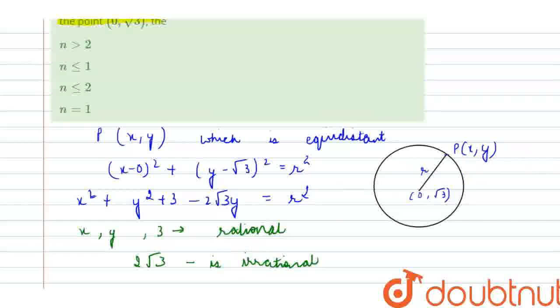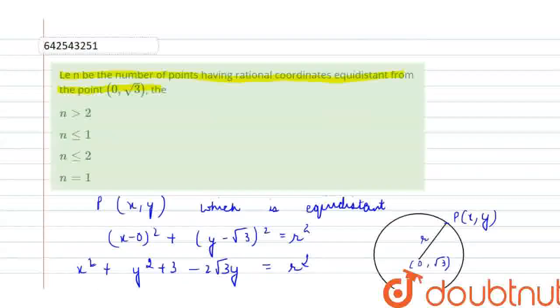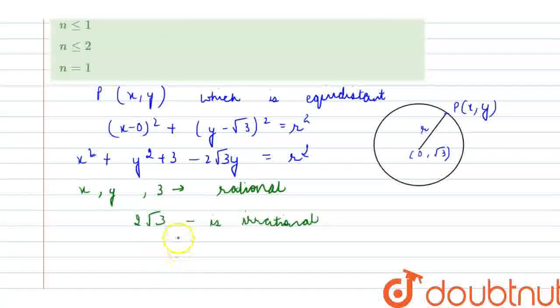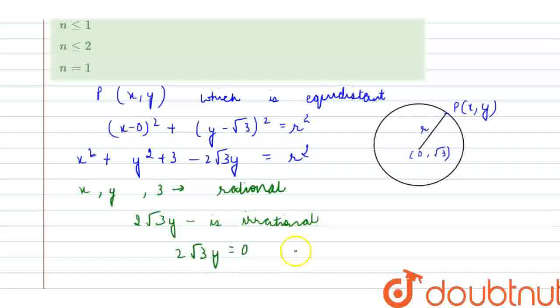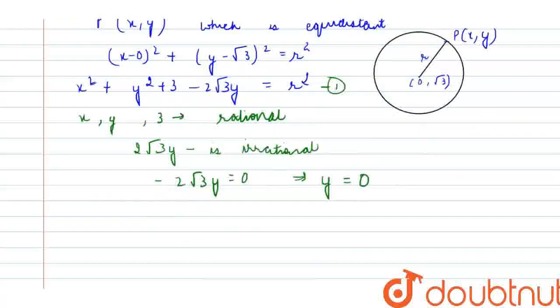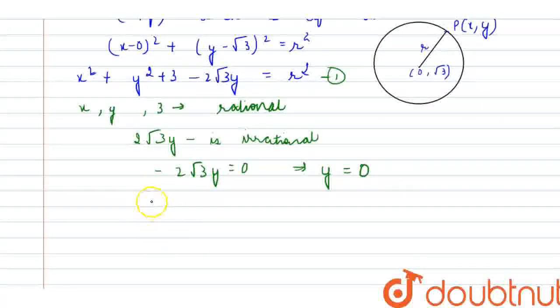So in the question, it is given that the rational coordinates, so basically, I will be equating it with 0. So 2√3y would be equal to 0. From here, I get, it would be minus 2√3y. So from here, I get y is equal to 0. Putting it in equation number 1, equation 1 becomes x² + y² + 3 = r².